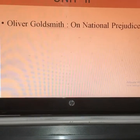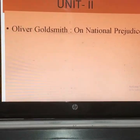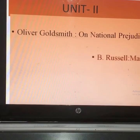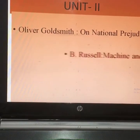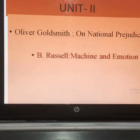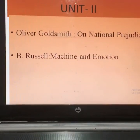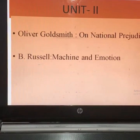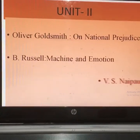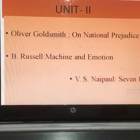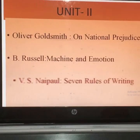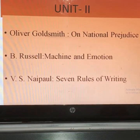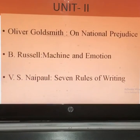The second writer in Unit Second is B. Russell; the title of the essay is 'Machine and Emotion.' The third writer is V.S. Naipaul; the title of the essay is 'There Are Seven Rules for Writing.'